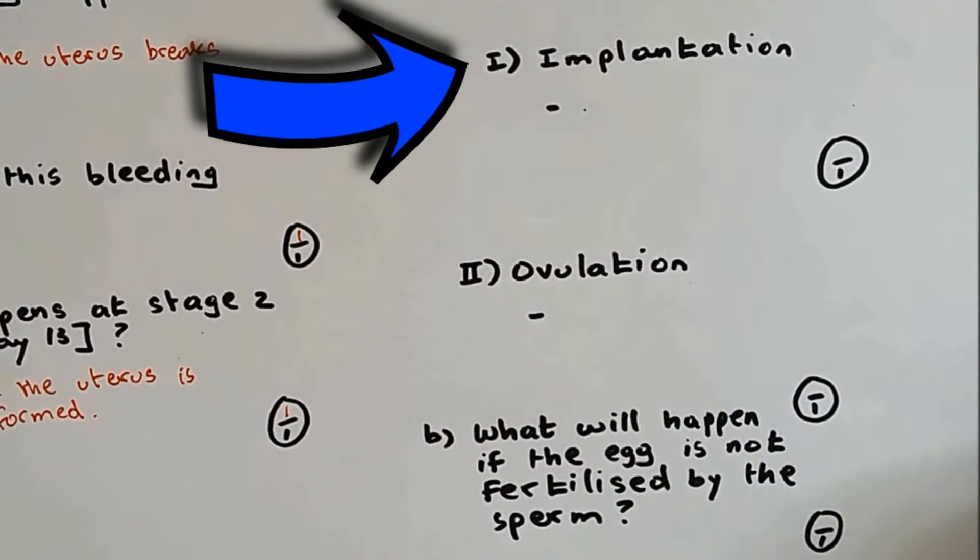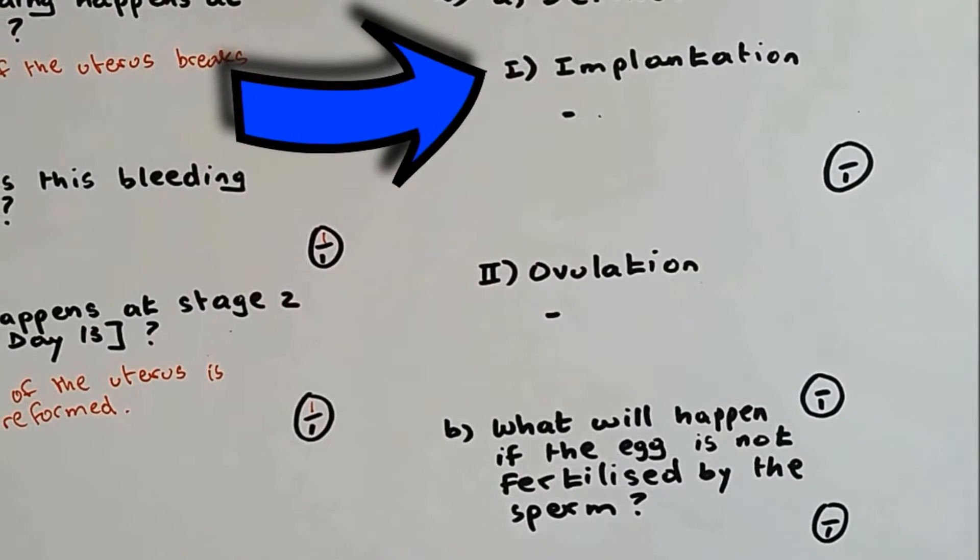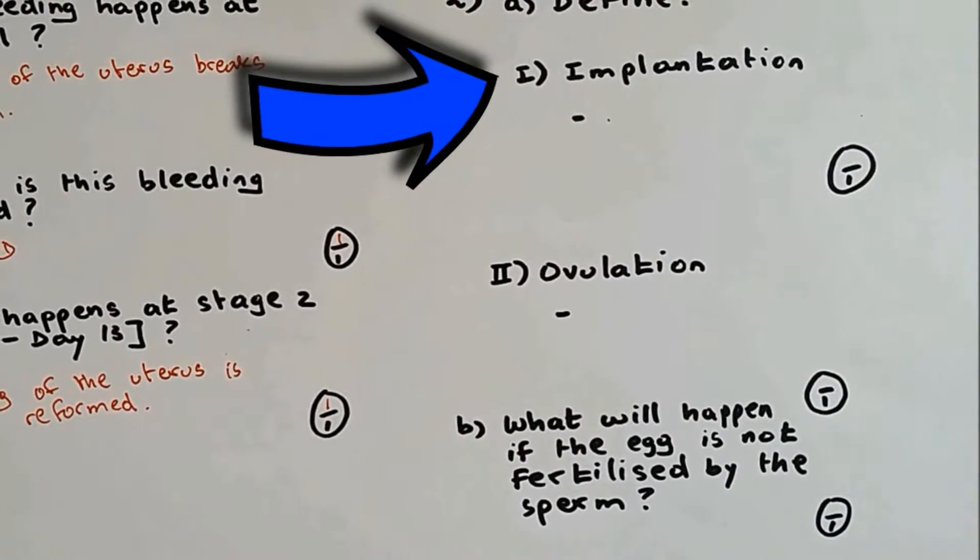Question 2a: define implantation. Implantation is when the embryo gets attached to the lining of the uterus.